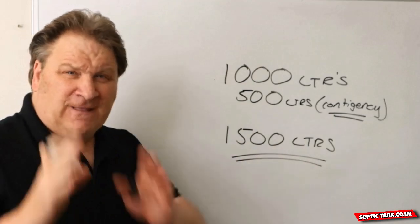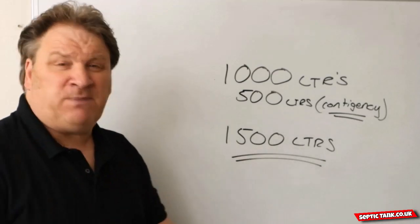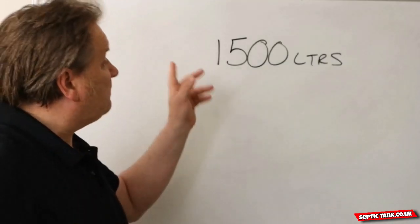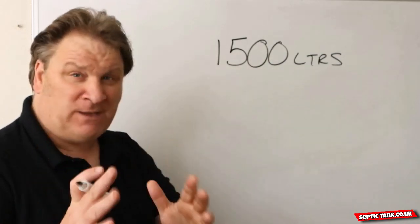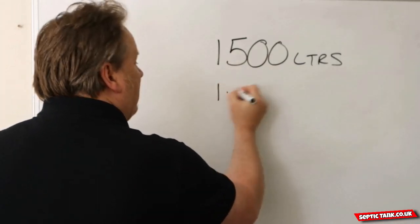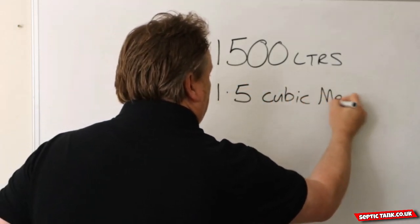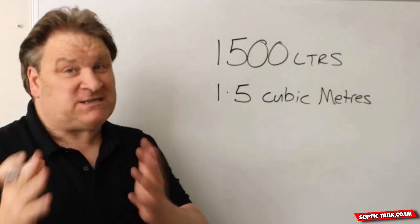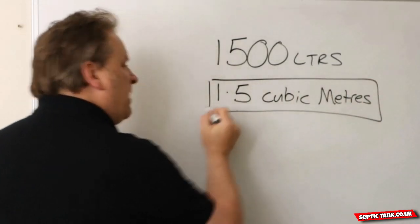That is the figure building control will be looking for if you submit your plans. Now we convert the 1500 liters produced every 24 hours into cubic meters. 1500 liters is basically the same as 1.5 cubic meters. That's the calculation, and this is the figure we're interested in.